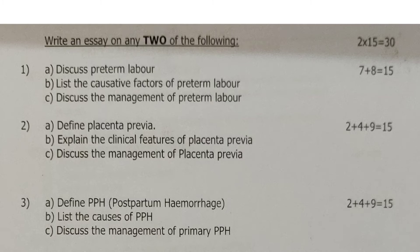Write an essay on any 2 of the following. Out of 3 questions, you have to answer 2, so 2 into 15 is equal to 30 marks. Question 1A: Discuss preterm labor. 1B: List the causative factors of preterm labor. 1C: Discuss the management of preterm labor.